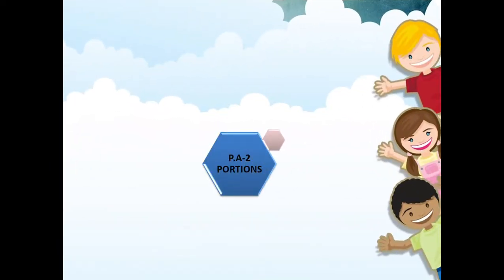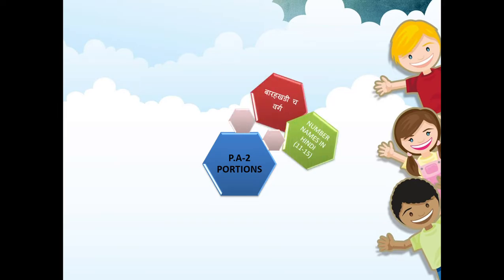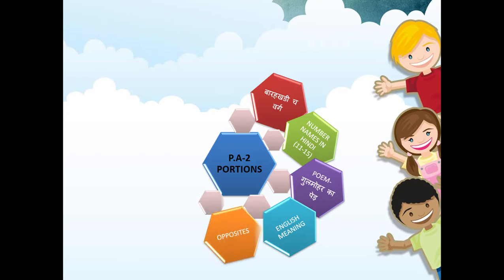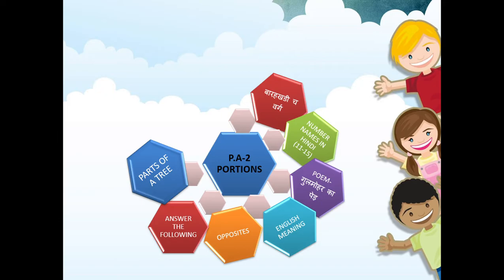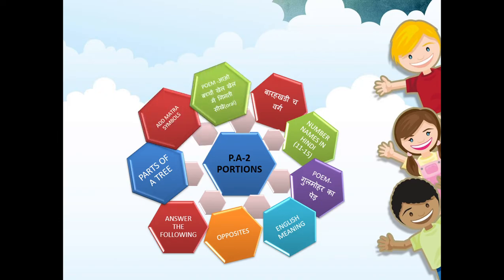Children, in PA2 portions, we have completed studying: Badha khadi chavark, number names in Hindi from 11 to 15, poem Gulmohar ka ped, English meaning, opposites, answer the following, parts of a tree, add matra symbol, and poem Aao Bachcho Khel Khel Mein Ginti Sikho.